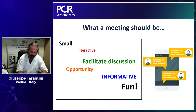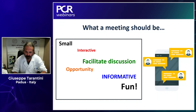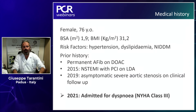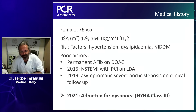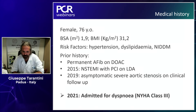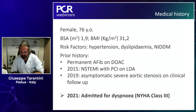For the sake of time, I think it's important to start with the case. What we are going to discuss today is a female, 76 years old. She is obese, class one obesity. Among the risk factors: hypertension, dyslipidemia, diabetes. The patient had a history of AFib on DOAC, a stent in 2015 treated with PCI on LAD. In 2019, there was the finding of symptomatic severe aortic stenosis on clinical follow-up. In 2021, she was admitted because of dyspnea, NYHA class three.